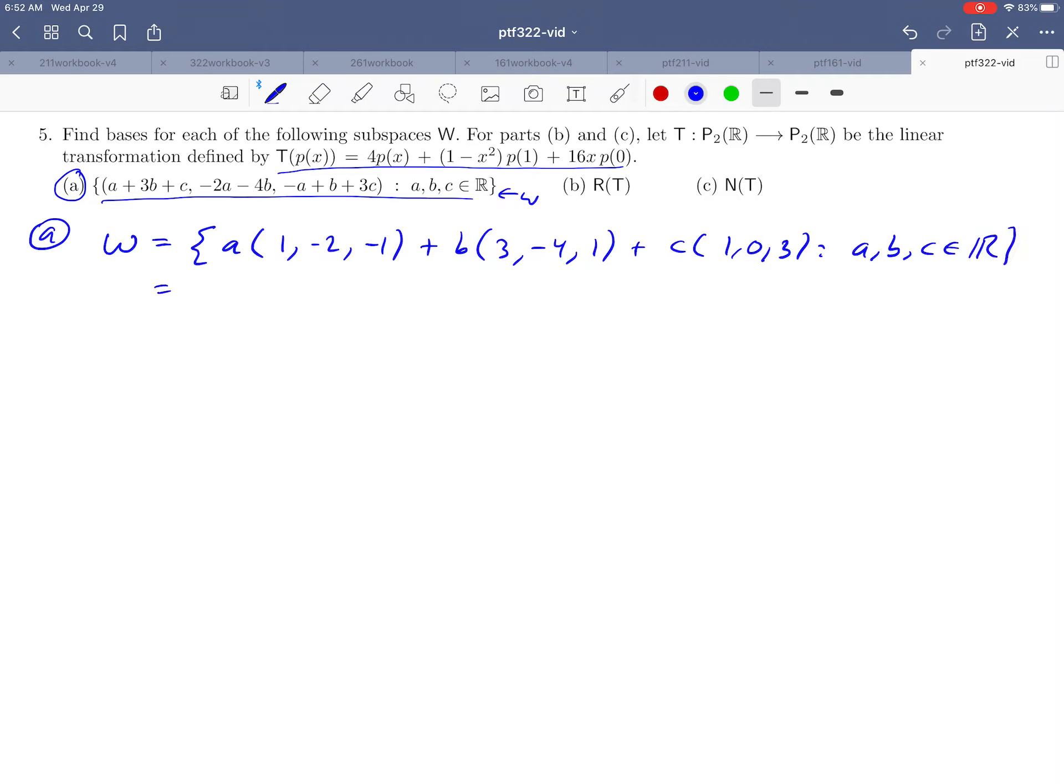That's convenient because notice that that's the very definition of the span of the three vectors that I'm underlining. So we can note that W has been rewritten in the form of the span of those three vectors.